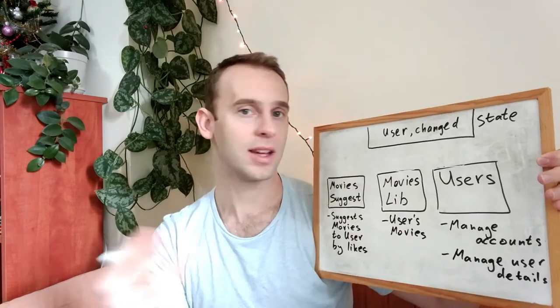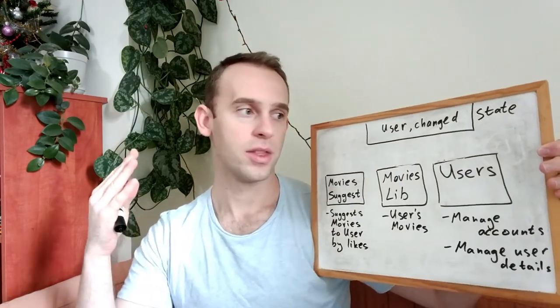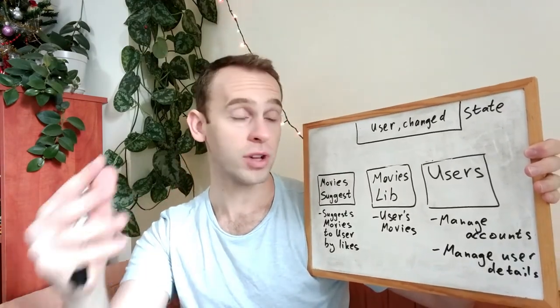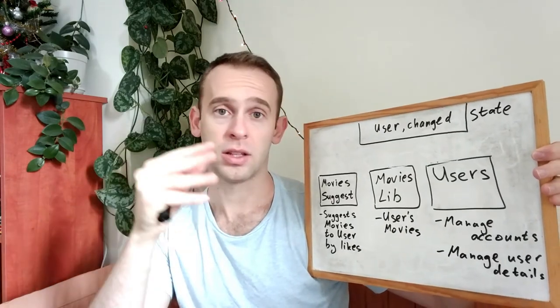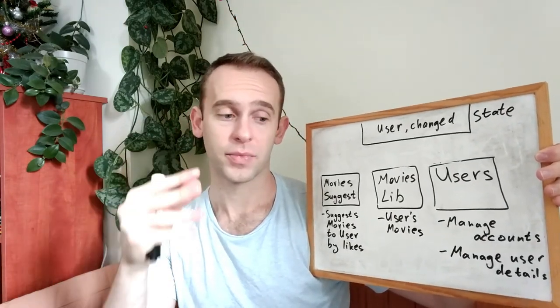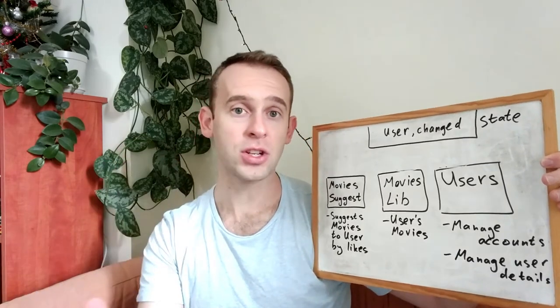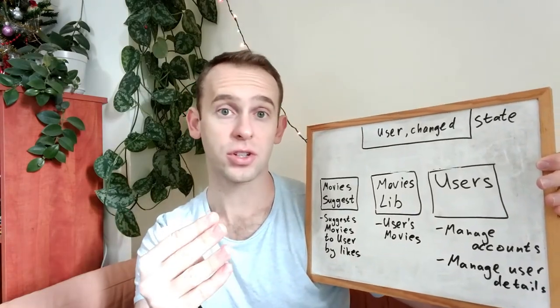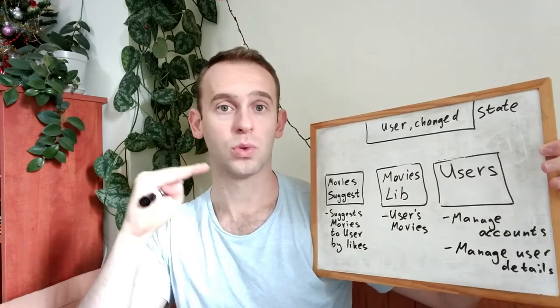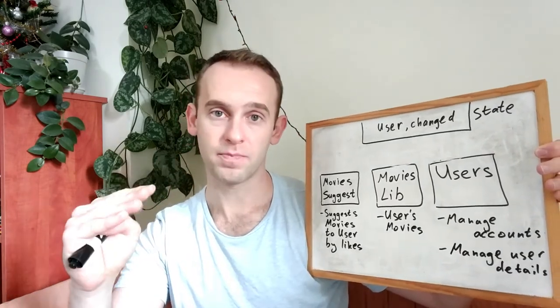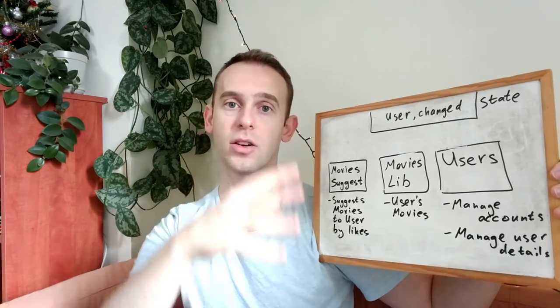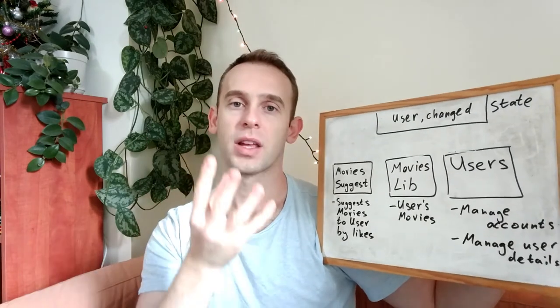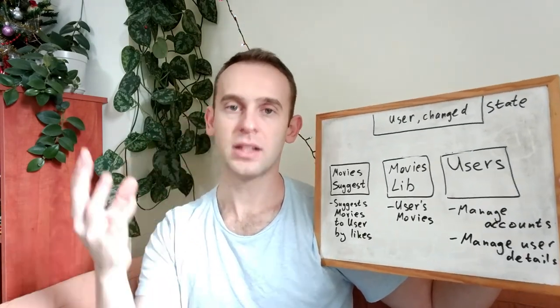Other things that might be in this state object, in our case, is for example, the current movie the user is watching or reading details of or the current trailer that the user is watching and his reaction to that trailer. The current page the user is looking in our app and the details of that page, like the current search of the user, the words he typed to look for a movie by the name.